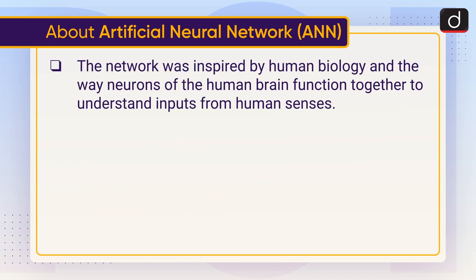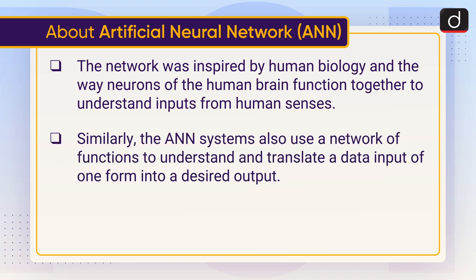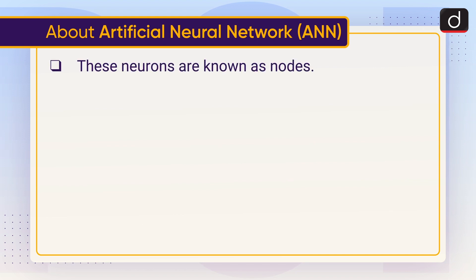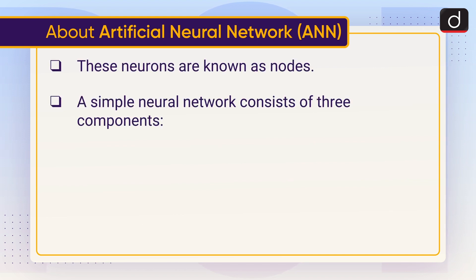The network was inspired by human biology and the way neurons of the human brain function together to understand inputs from human senses. Similarly, ANN systems also use a network of functions to understand and translate a data input in one form into a desired output. ANN models simulate the electrical activity of the brain and nervous system. These neurons are known as nodes. A simple neural network consists of three components: input layer, hidden layer, and output layer.